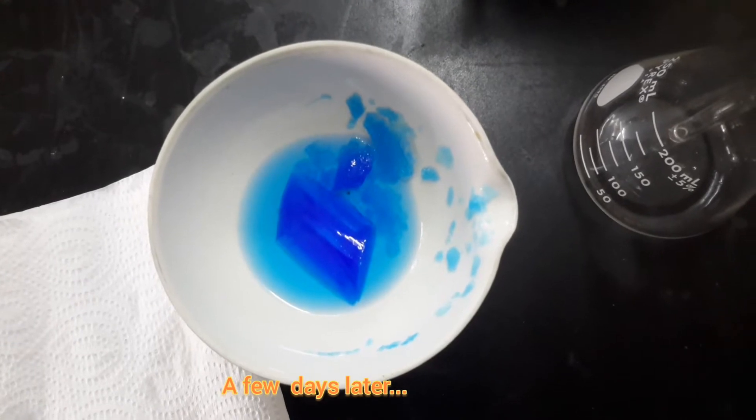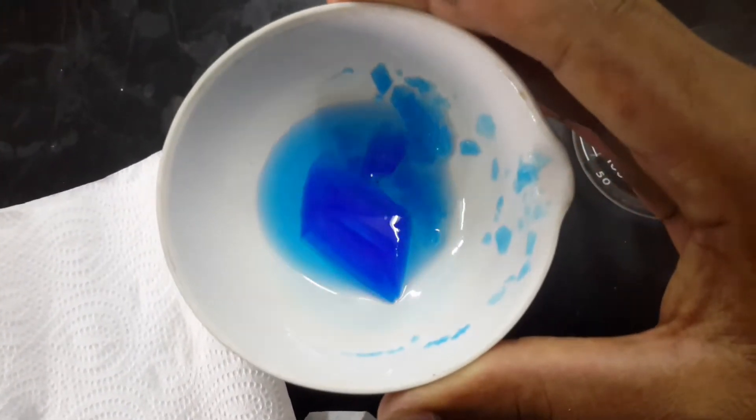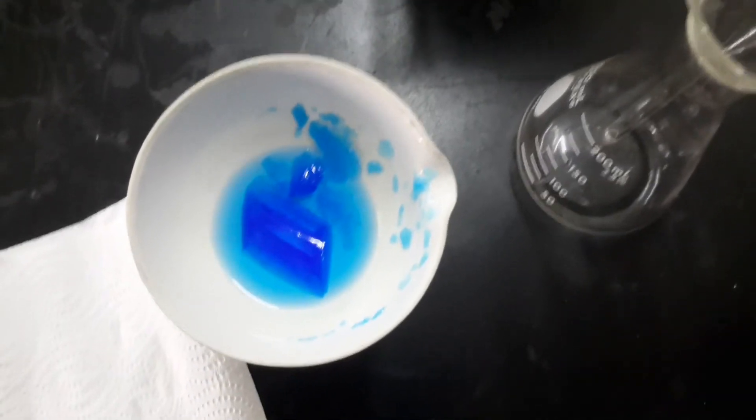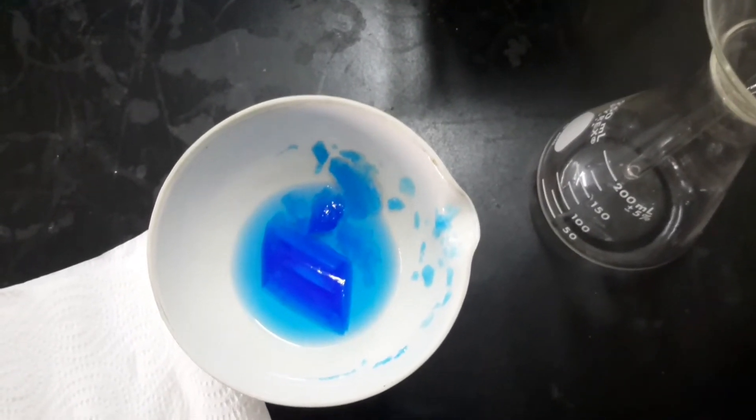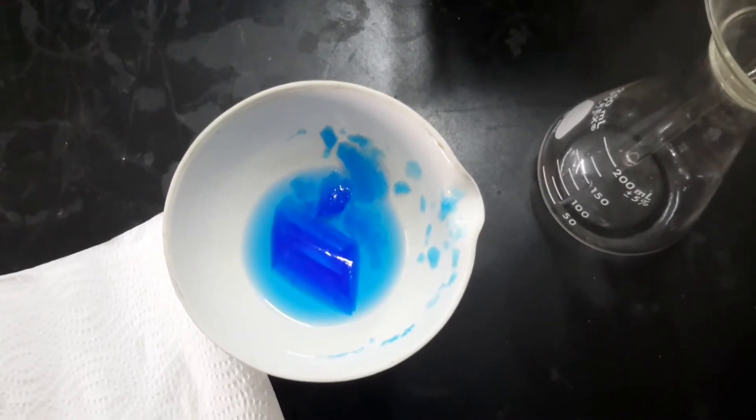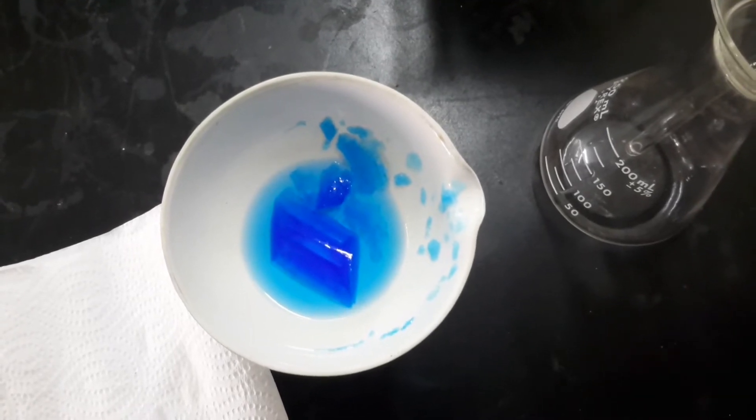Days later, the crystals or copper sulfate crystals are ready to be removed or separated from the mixture. We're just going to filter this off and then we're going to just rinse it, rinse the crystals with minimum amount of distilled water, and then we pat them dry.